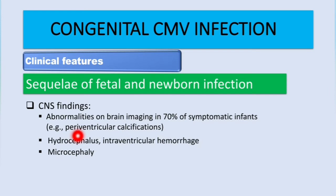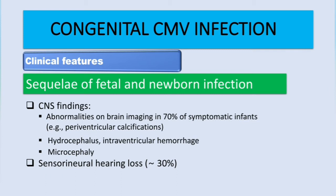Hydrocephalus is accumulation of cerebrospinal fluid due to increased production or decreased drainage. Microcephaly occurs because early CMV infection causes destruction of glial cells and other brain cells, leading to decreased brain volume and increased ventricular size. Another complication is sensorineural hearing loss, occurring in about 30% of cases, and chorioretinitis, which occurs in 10% of cases.